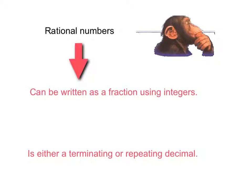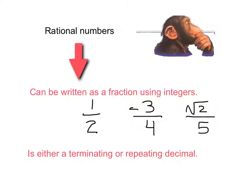Let's do an example. A fraction using integers: one over two — one and two are integers, so it's a fraction considered a rational number. How about negative three over four? Negative three is an integer, and so is four, so that meets our definition — negative three-fourths is a rational number. How about square root of two over five? Square root of two is not an integer, so this is not considered a rational number — that wouldn't fit our definition.